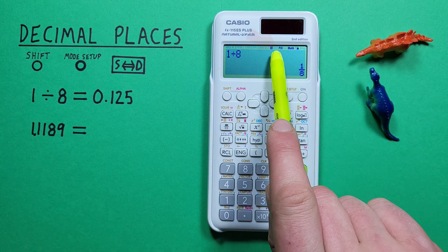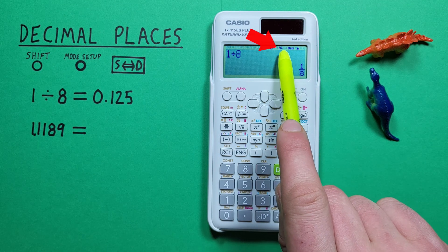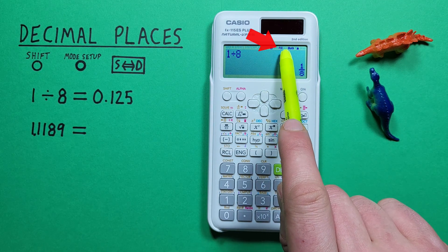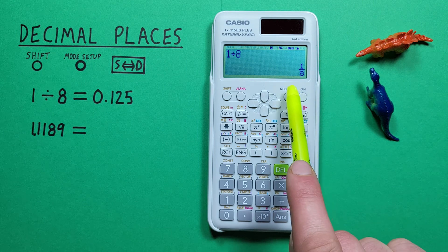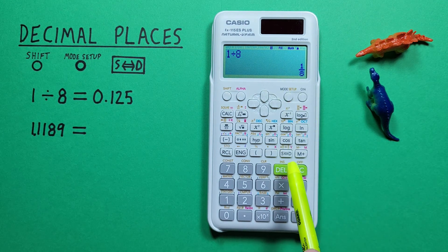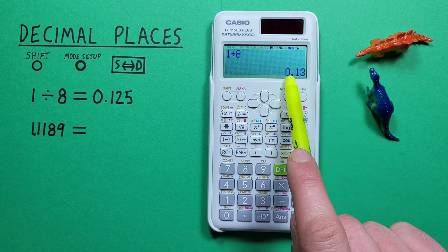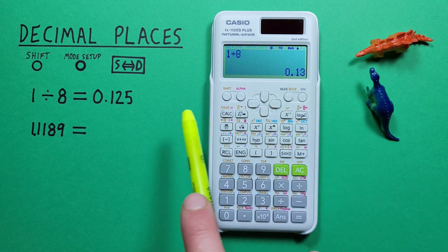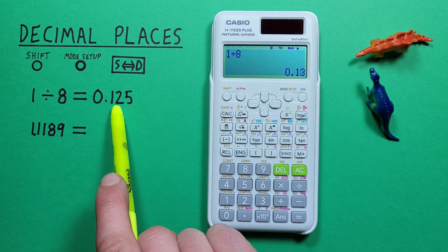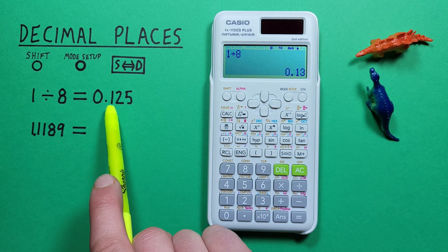We now see the word fix at the top of our screen letting us know our calculator is currently rounding. And we're back to our fraction but if we press the conversion or STD key we now see we get 0.13 so that 2 has been rounded up to a 3 and we're at two decimal places.